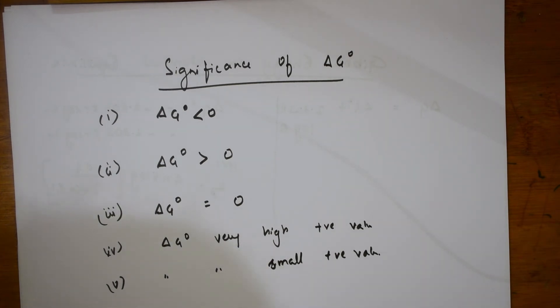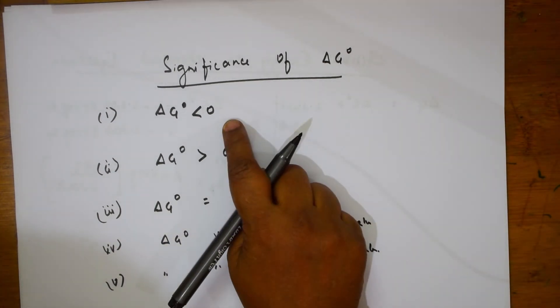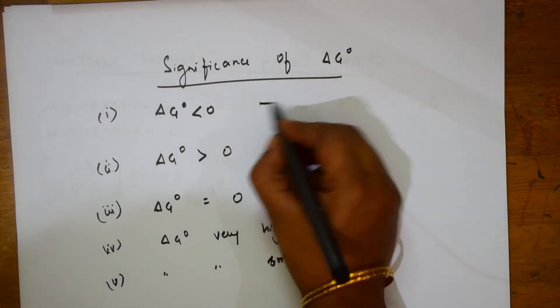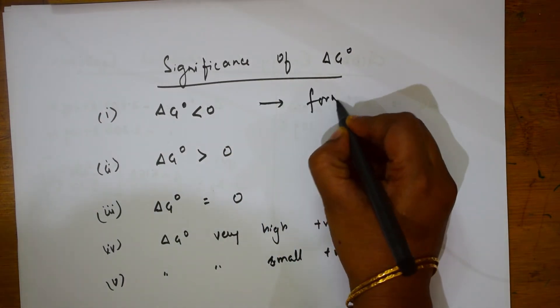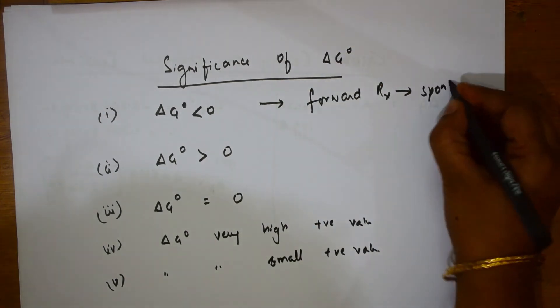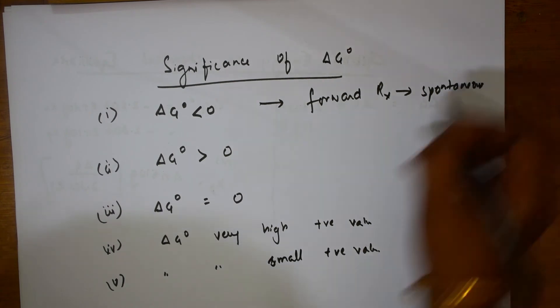Now, if Delta G is less than 0, that means the reaction is a forward reaction and it is spontaneous.